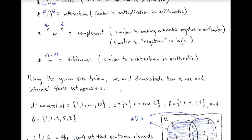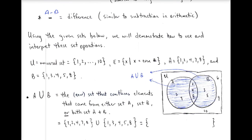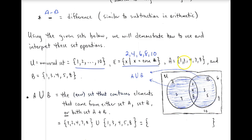Now let's look at an example. Our universal set is the natural numbers from 1 to 10. We know that E is the set of all x where x is even — so all the even natural numbers from 1 to 10. A is the set {1, 2, 4, 7, 8} and B is the set {1, 3, 4, 5, 8}. When we do A union B, this means everything — as long as an element is in set A or in set B, we put it in the new set A union B.